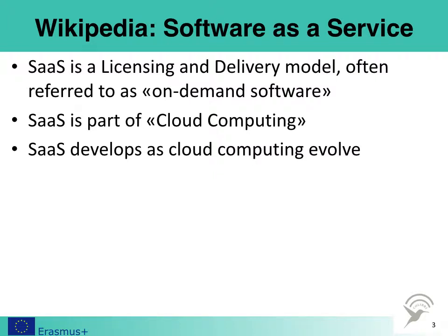The first paper is about software as a service from Wikipedia, thinking about the licensing and delivery model often referred to as on-demand service. Software as a service is a part of cloud computing, and we also see that software as a service develops as cloud computing evolves.